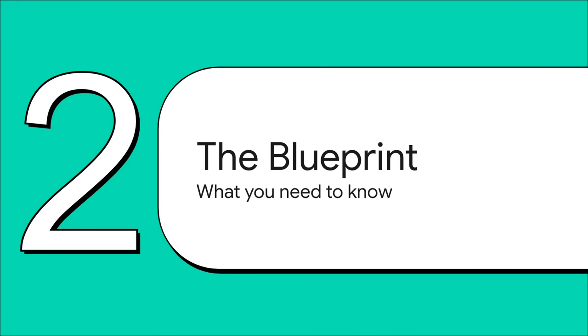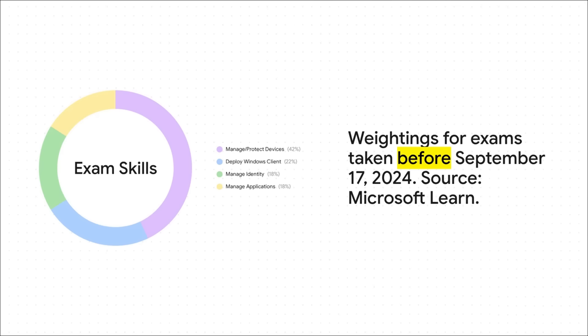Let's talk about the blueprint. This is, without a doubt, the most important part of your prep, because this is Microsoft literally telling you what they're going to test you on. If you understand these domains and how much they're worth, you can study smart, not just hard. Look at this chart closely — especially if you're taking your exam before September 17th, 2024. This is your map. A whopping 40 to 45% is all about managing, maintaining, and protecting devices. That right there is your number one study priority. The takeaway is crystal clear: you need to live and breathe device management in Intune. Master that, and you are well on your way.